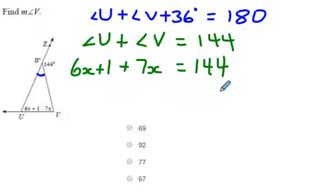So at this point we just have to solve for x. And to solve this equation we just join together our like terms. We have 13x plus 1 equals 144. So I'm going to subtract the 1 at this point and get 143. Next I have to get rid of the 13, so I'm going to divide both sides by 13, and I'll get 11.